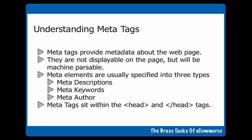There are specifically three types, or three groups, of meta elements. The first is called meta descriptions, which we'll come on to explain shortly. The second one is called meta keywords, and the third one is called meta author. And they usually sit within the head tags of your HTML code.